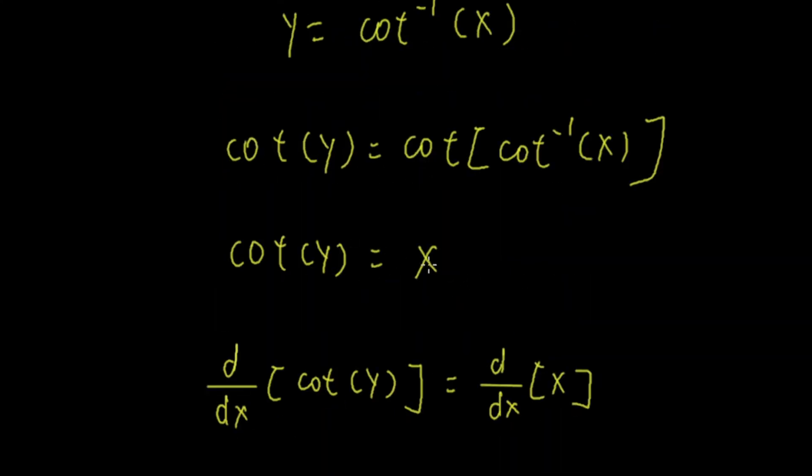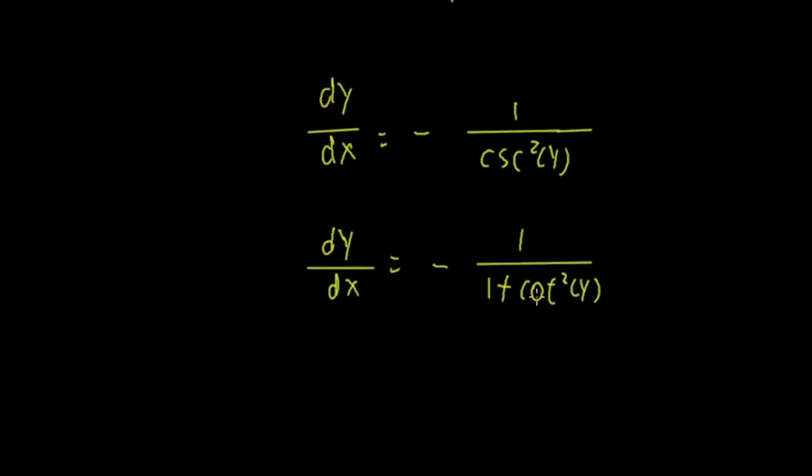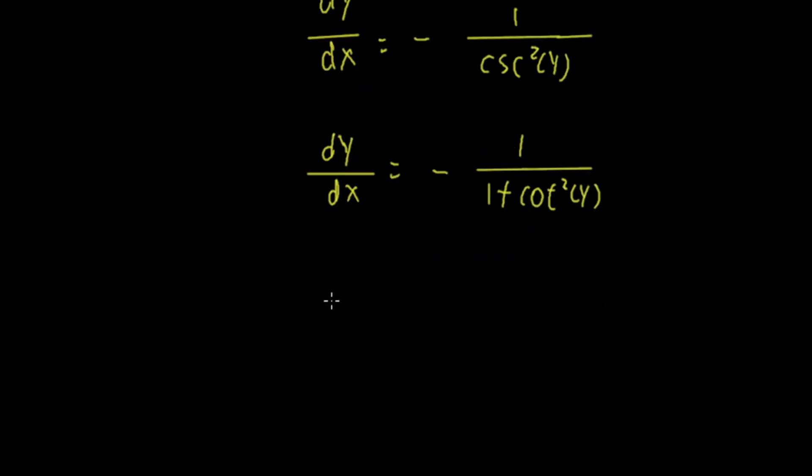Now we know that cot(y) equals x. That means cot squared y equals x squared. So we can write this as dy/dx equals negative 1 over 1 plus x squared.